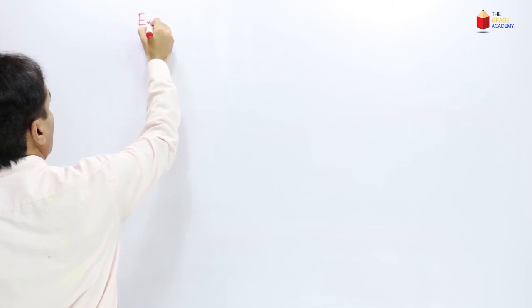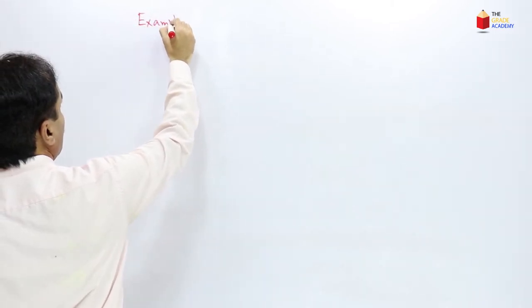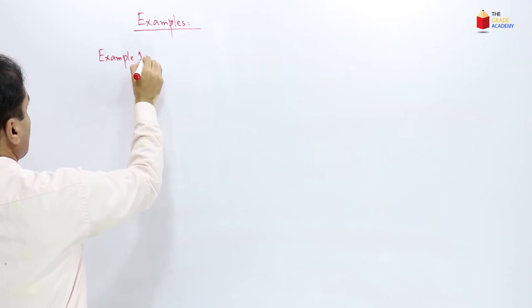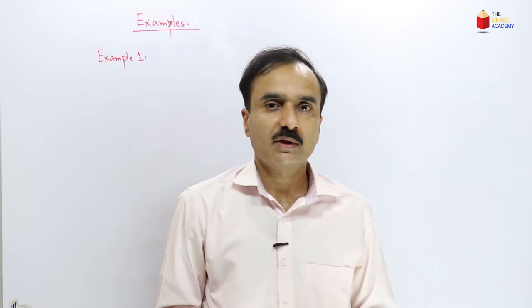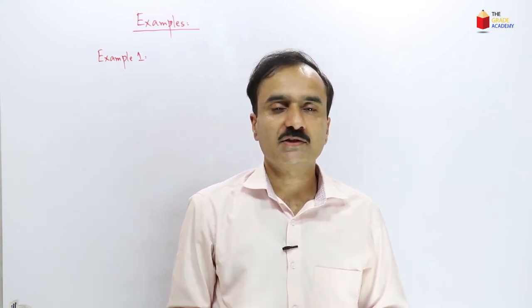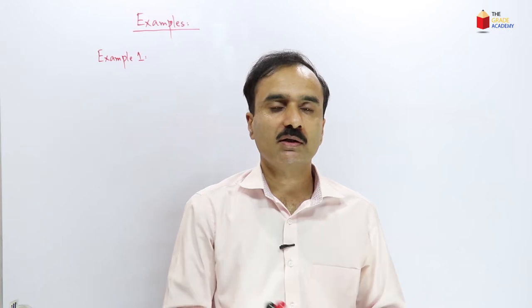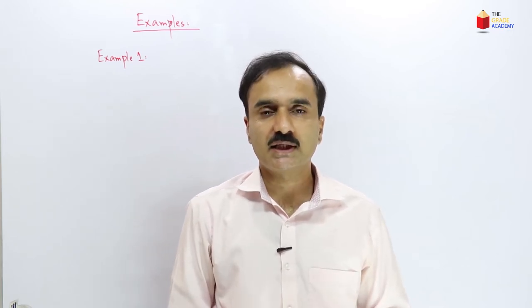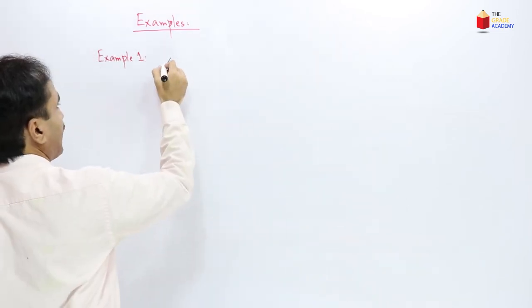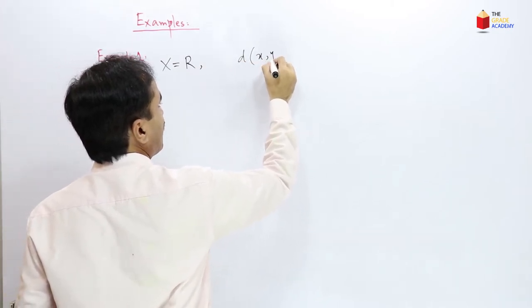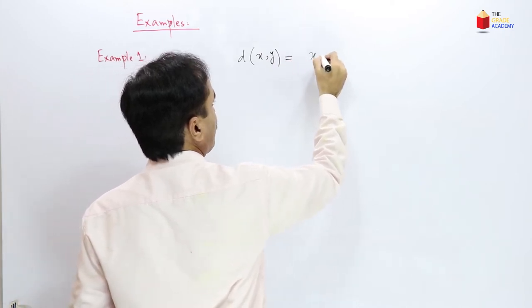Let us consider some examples of metrics and metric spaces. We consider the set of real numbers with a distance function and we are going to prove that this distance function is a metric on the set of real numbers, so the set of real numbers is a metric space. Here we consider our set X as the set of real numbers and let the distance function d(x,y) be equal to |x − y|.